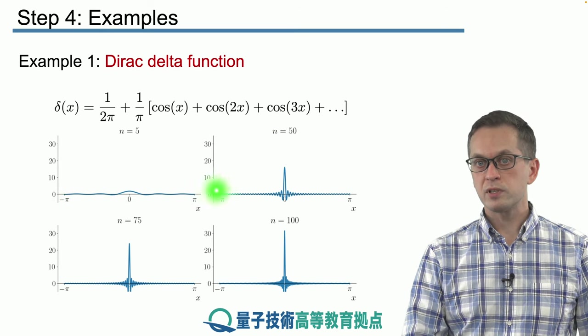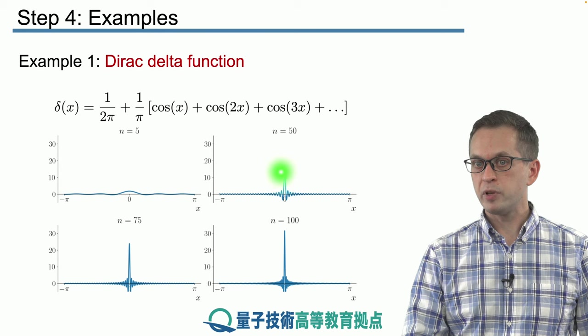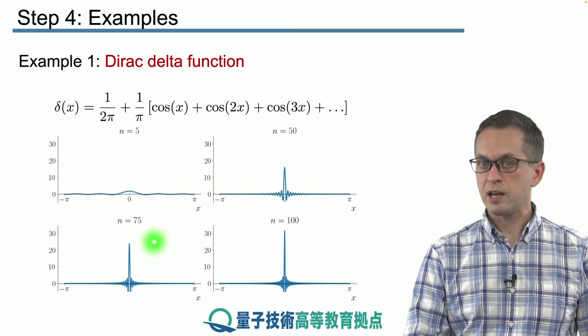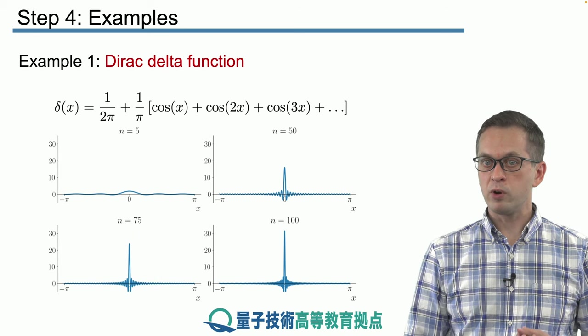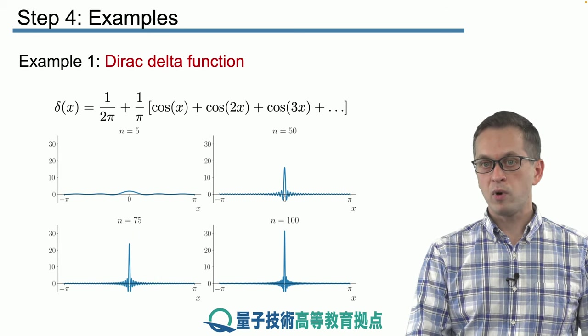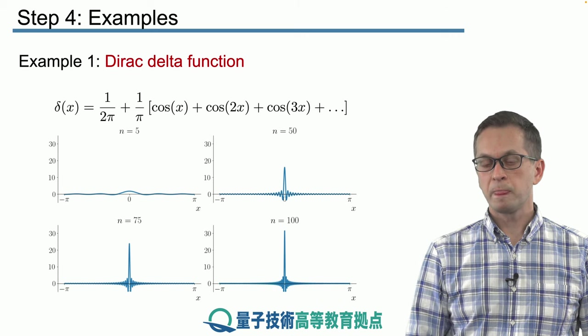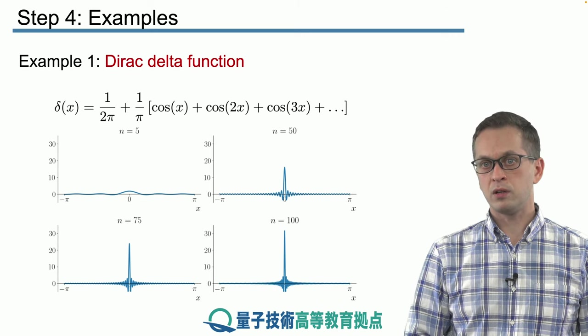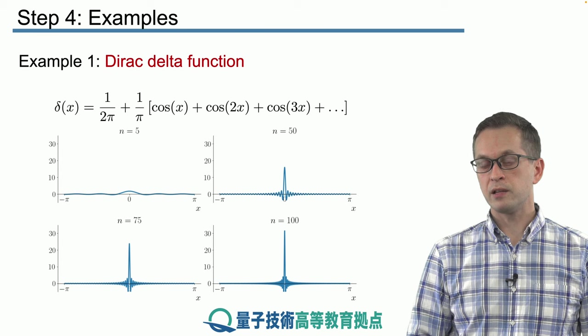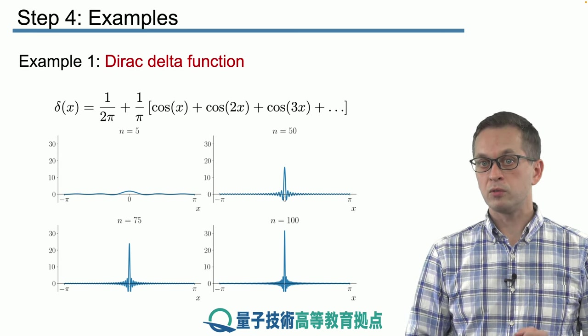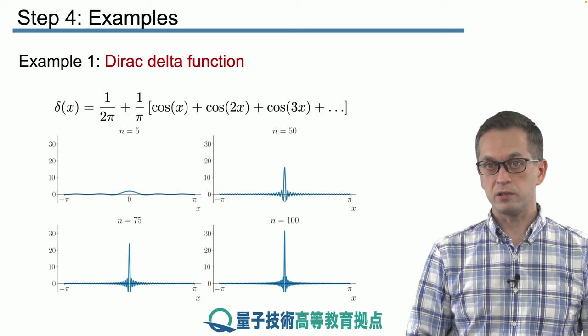We go up to 50 terms, and we can see that there's a little peak starting to develop around x equals 0. And as we increase n, this peak is becoming more narrow and higher and higher, while everywhere else the function remains close to 0. And this shows you again that all the higher frequencies are equally important to reproduce the Dirac delta function as the low frequencies.